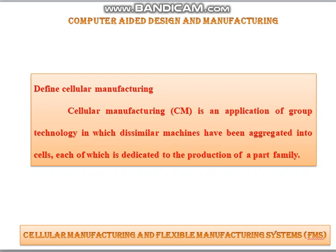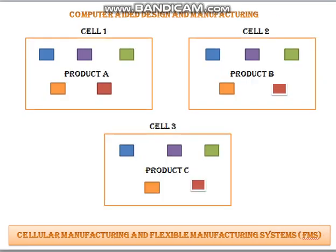Let us see some block diagram of this cellular manufacturing. Here it consists of three cells — cell 1, cell 2, and cell 3 — and we have arranged product A, product B, and product C in these three cells, where the color blocks indicate the different tools.